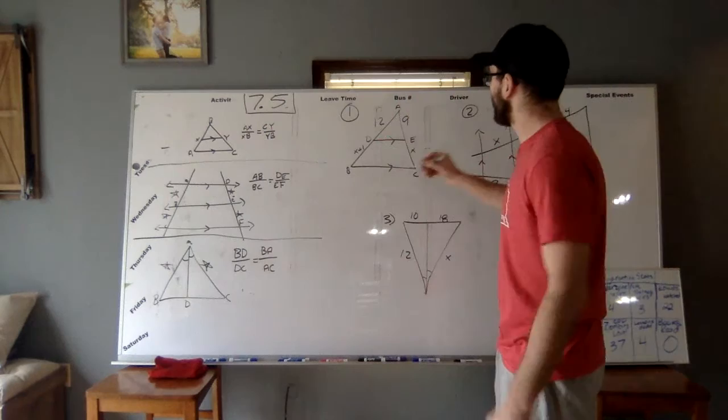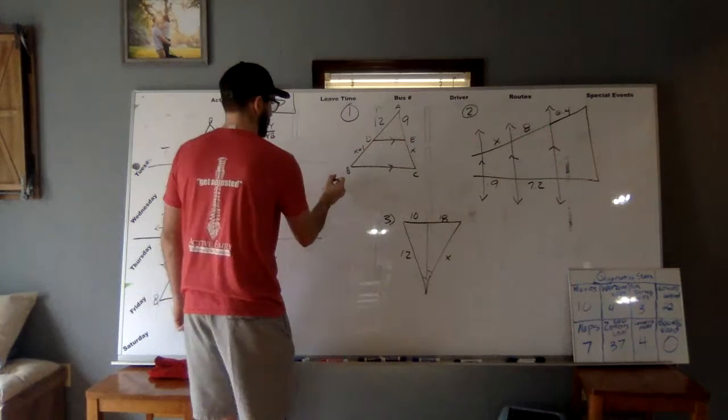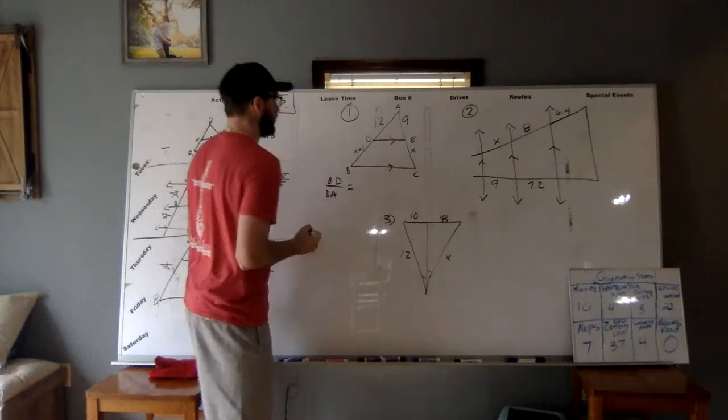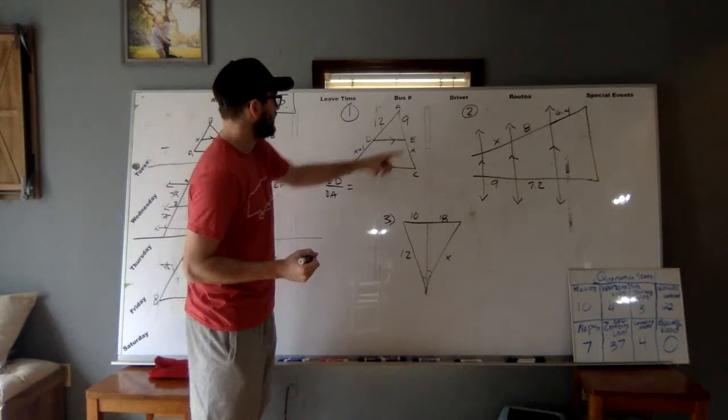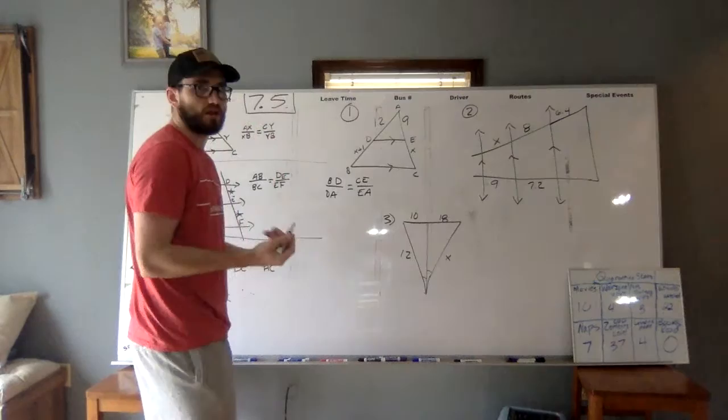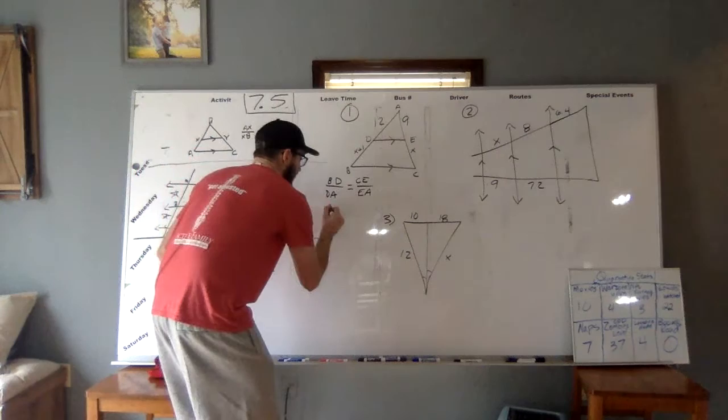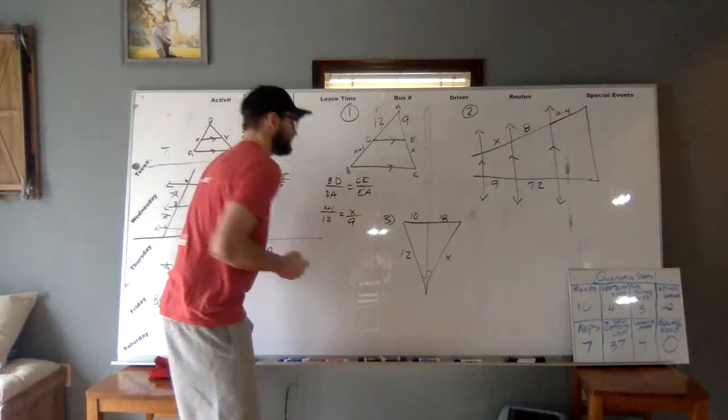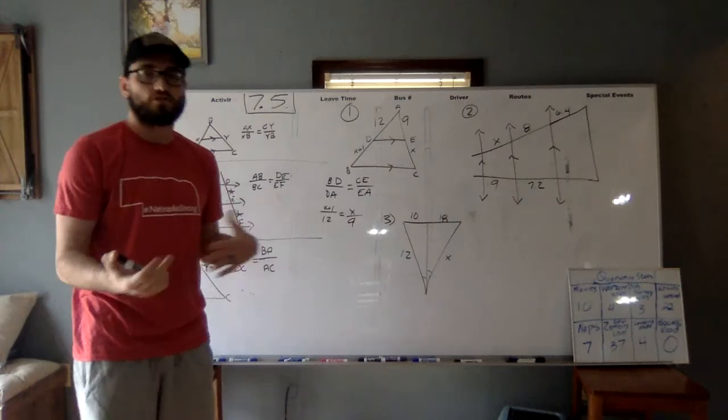So now when we go to do one, I look back to my original one, AX over XB. So I'm going to look here and go, okay, it looks like AX in this case is BD. So I'm going to do BD over XB. So in this case, XB is DA. So BD over DA is equal to CY. So that's going to be CE. So CE over EA. And I take the time to set it up with the letters, not plugging in the values yet, just making sure I have everything matching the original picture. Now I can plug things in. Well, BD is X plus 1. DA is 12. CE is X. And EA is 9.